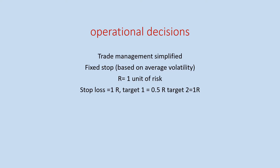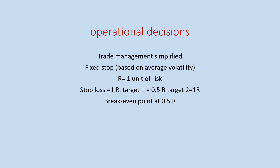The targets: we're going to have a first target at half R, so 0.5R, and another target at 1R. We will see why in a second. I also want to introduce a break-even point — once the market reaches the half R level and we take half a position out, we are going to put the stop at break-even. So we're not going to give back the profit we would have made up to that point.